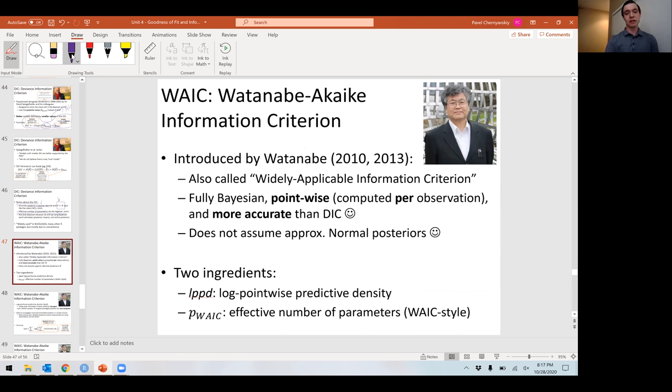About 10 years after the DIC was popularized comes the Watanabe Akaike Information Criterion. Sumio Watanabe is on our slide. He didn't name the criteria after himself - he is far more sensible than that. I believe he called it the widely applicable information criterion. This one really is fully Bayesian because it uses every single one of our MCMC samples and every single one of our observations. That is why people say the WAIC is fully Bayesian, whereas the DIC is not. It also therefore does not assume that the posteriors are approximately normal.